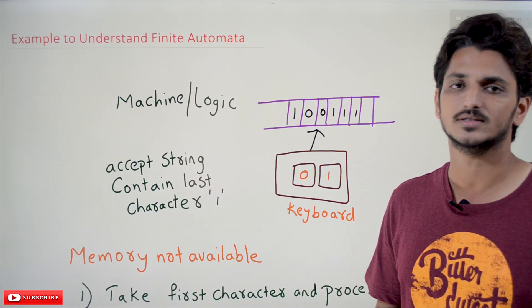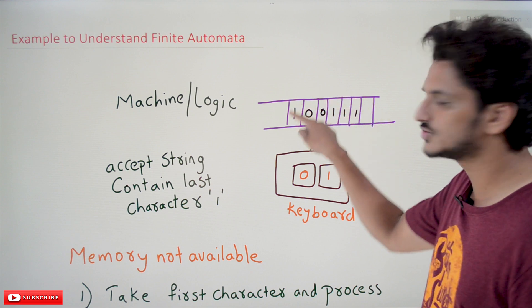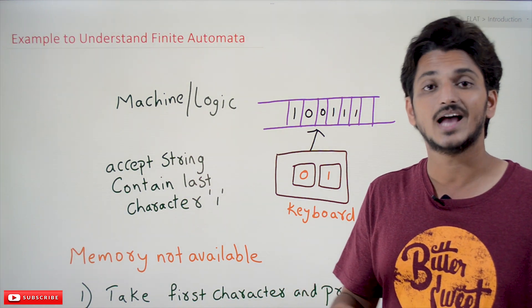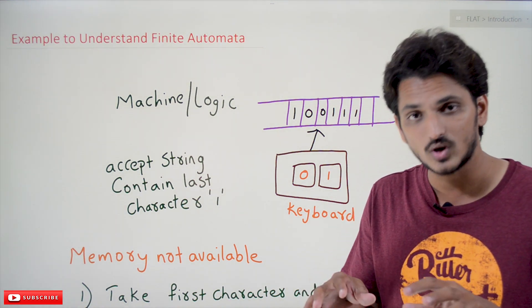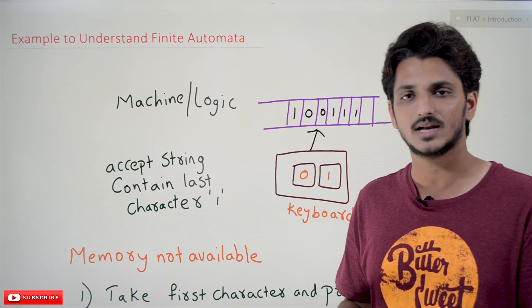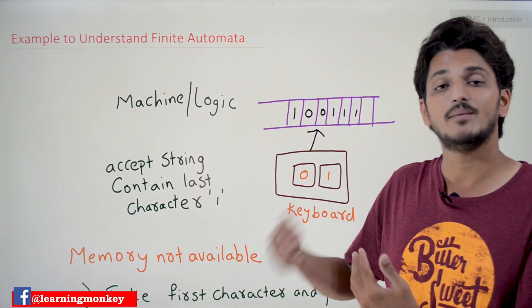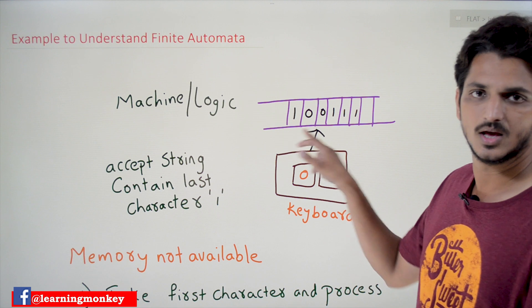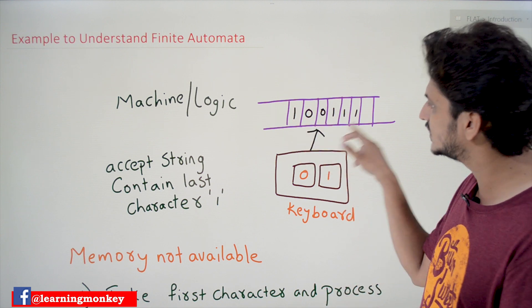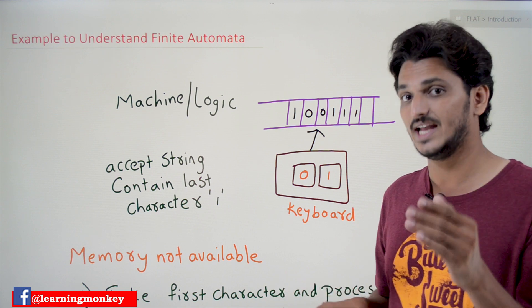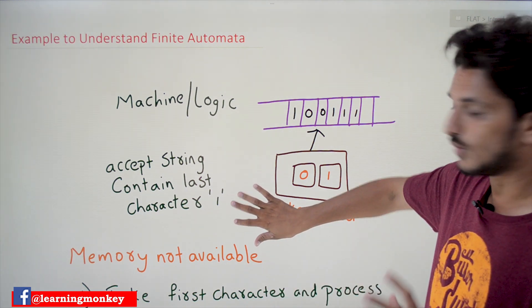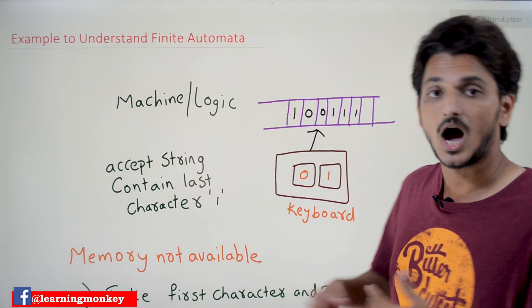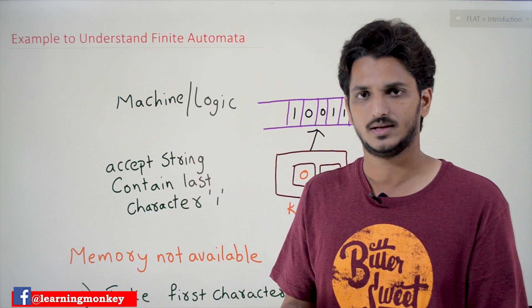Now if this memory is not there — if we don't have a memory device, it hasn't been invented — how do we construct the logic? That is what we will explore with this example. In coming classes we will do more complex logics without memory. Please watch carefully, again and again, till you get clarity.